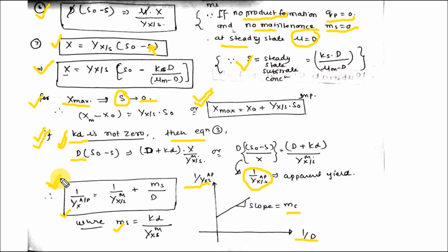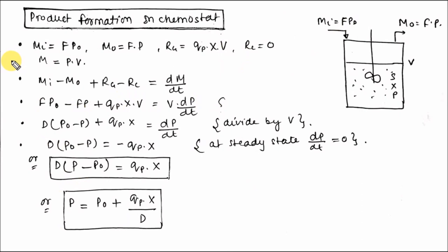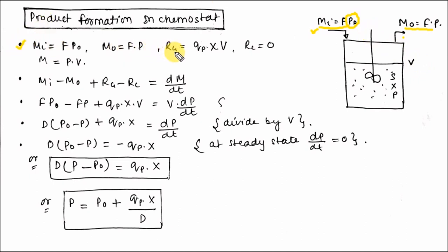This is a very important equation — remember it, as it helps calculate numericals in bioprocess engineering for chemostat operations. Now let's discuss product formation in the chemostat. There is continuous input and continuous output. MI equals F times P_naught (initial product concentration) and MO equals F times P (final product concentration). Volume is constant. Calculate parameters MI, MO, RG, RC, where RG equals Q_P times X times V and Q_P is the specific product formation rate.